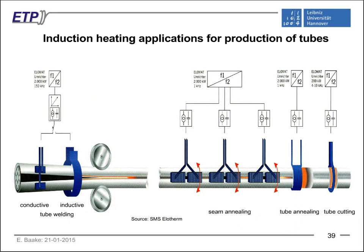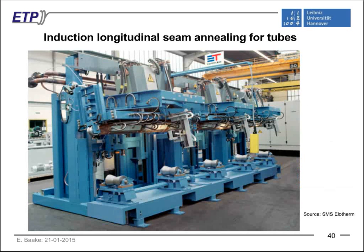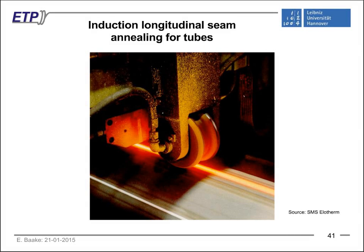Another field with many applications is the production of tubes — tube welding, seam annealing, cutting, or complete tube annealing. In an industrial installation for seam annealing, tubes run through large machines where the welded seam must be annealed locally — not heating the complete tube again, but only the zone where welding was done.